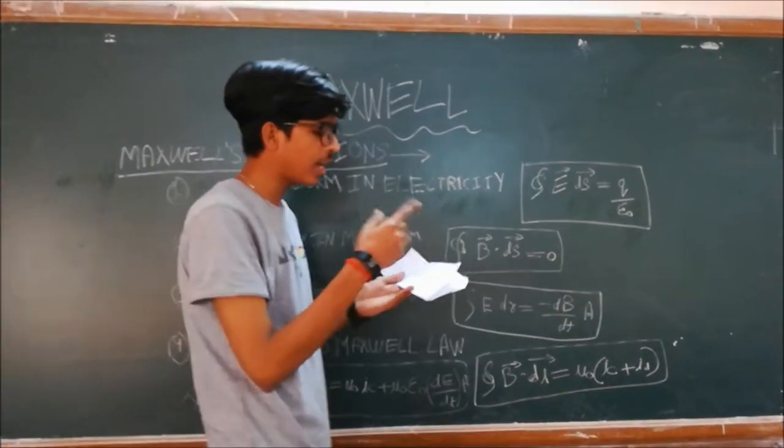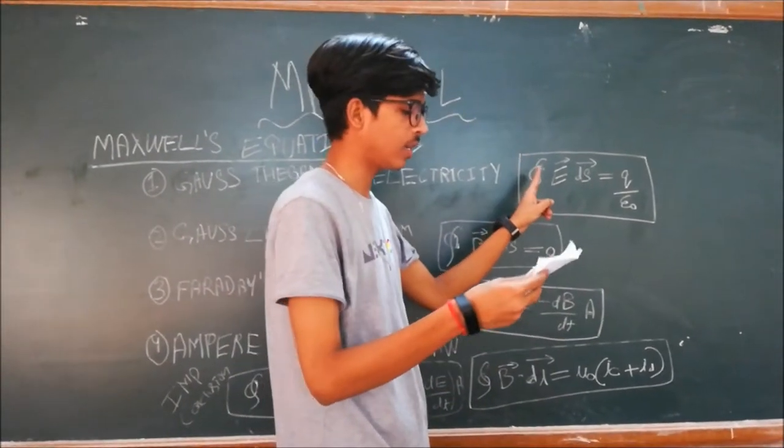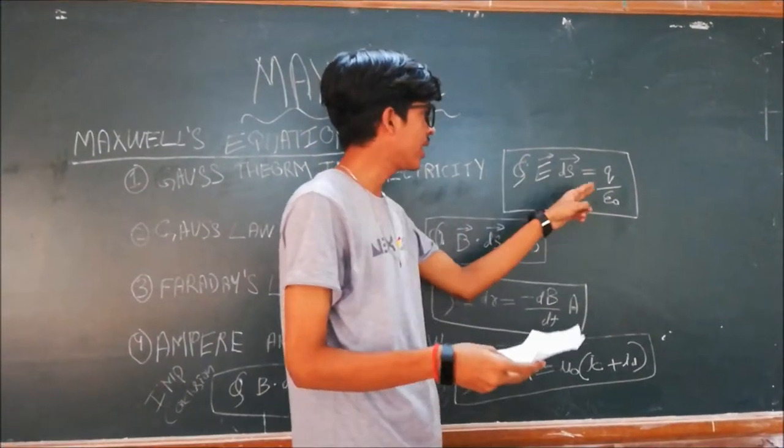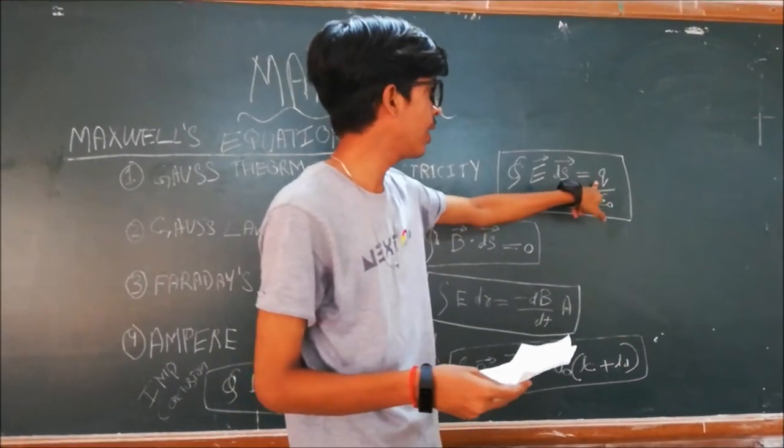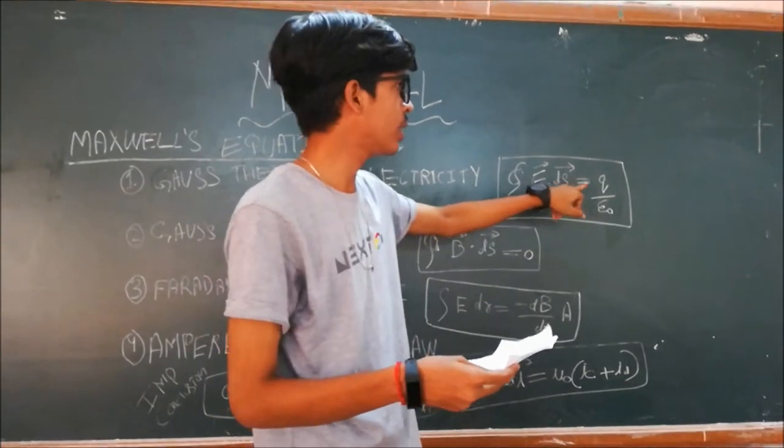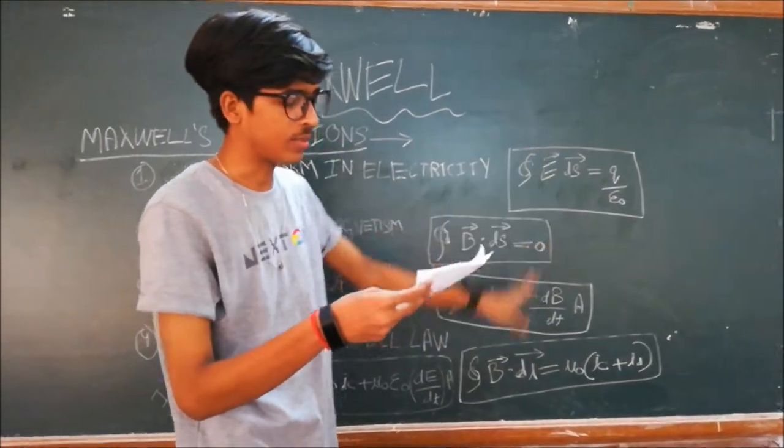In Gauss's theorem in electricity, here we can see an electric field is created with the change of electric charge. This is the electric field and this is the electric charge. So here the electric field is created due to this electric charge.